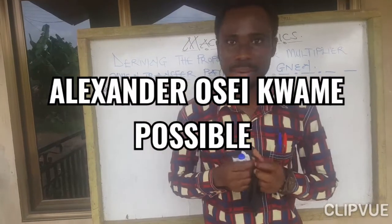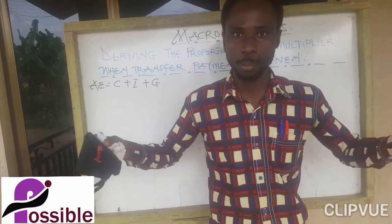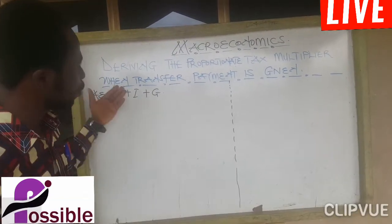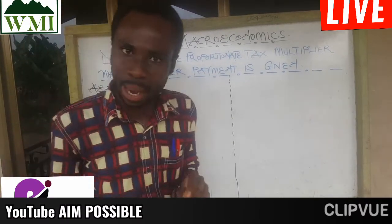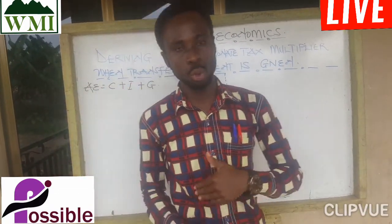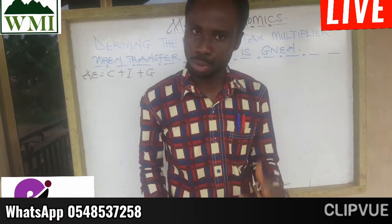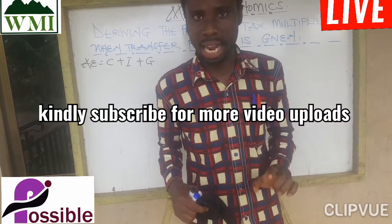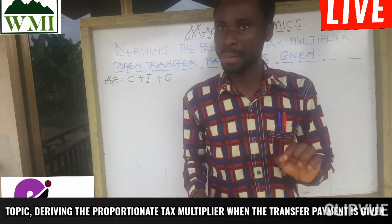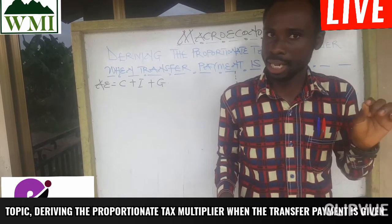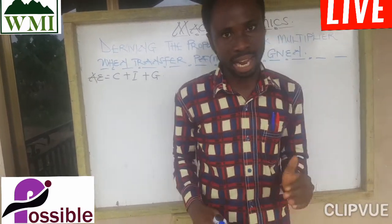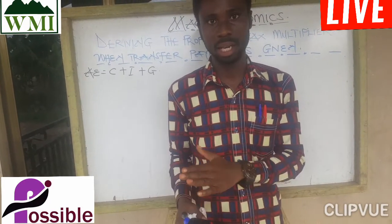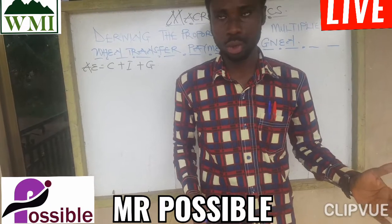My name is Alexander Oseko, you can call me Possible for short, from Ghana. In a previous lecture we looked at how to derive the proportionate tax multiplier when transfer payment is not given. Transfer payment has no effect on the multiplier. Lump sum tax or proportionate tax is what has an effect on the multiplier.